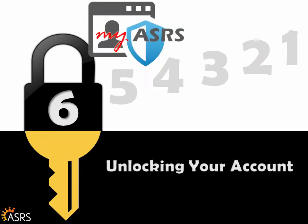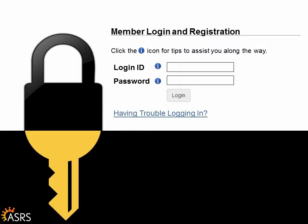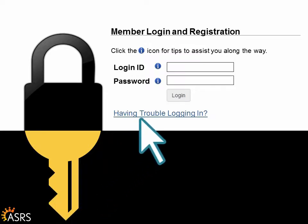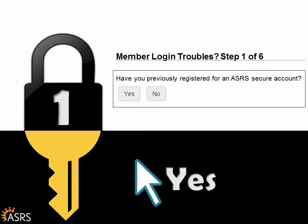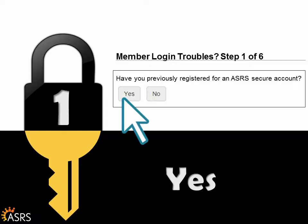There are only six steps to unlock and restore access to your secure MyASRS account. Click on the Having Trouble Logging In link below the login ID and password boxes. Click Yes if you have ever registered for secure account access before, because if you click No, it will direct you to the first-time registration process rather than the unlock process.